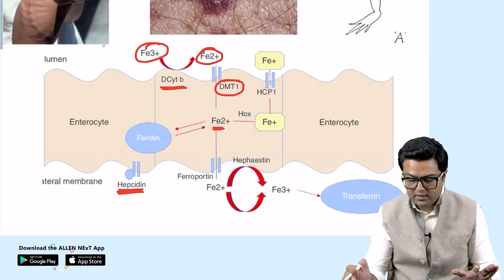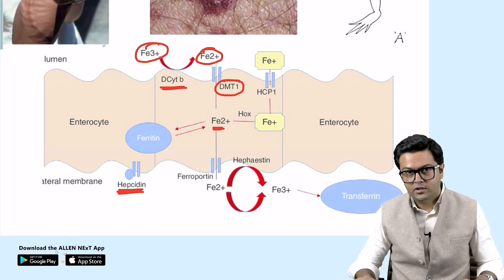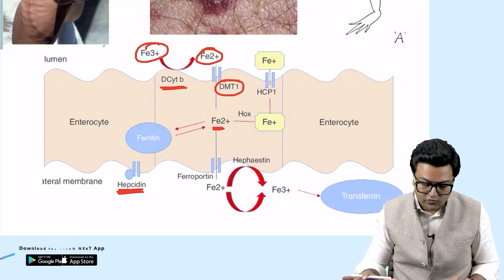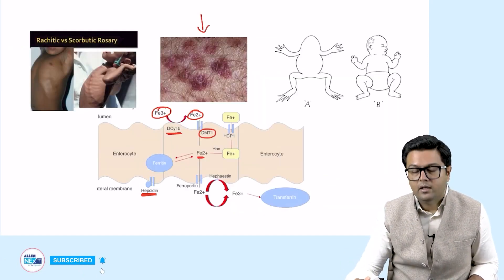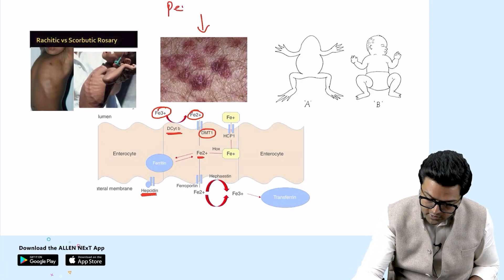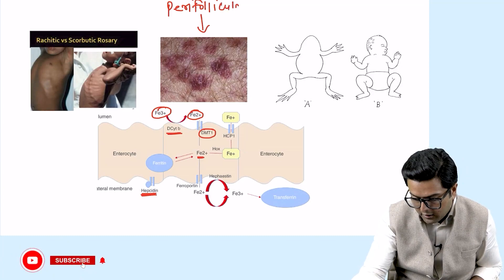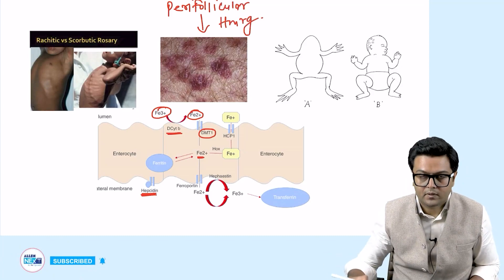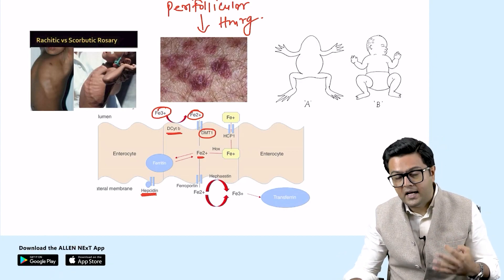Vitamin C deficiency is not just about bleeding gums. An important feature is perifollicular hemorrhage — that is, bleeding around the hair follicle. This is a very important sign of vitamin C deficiency.